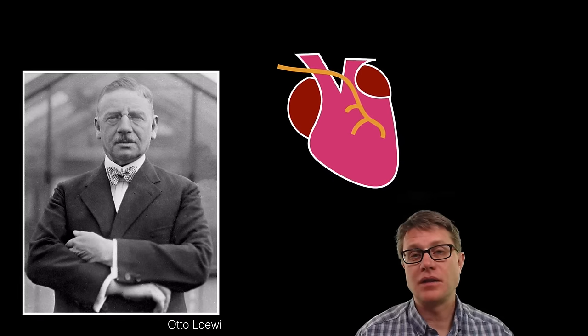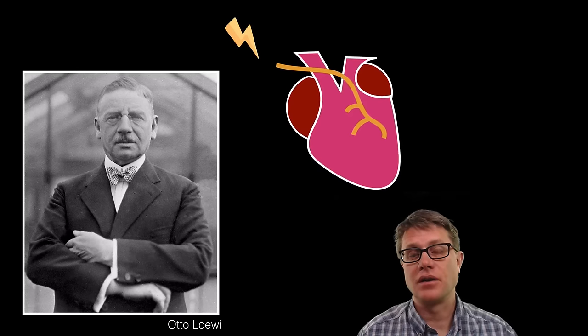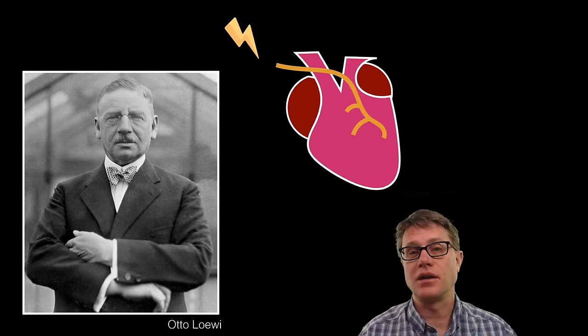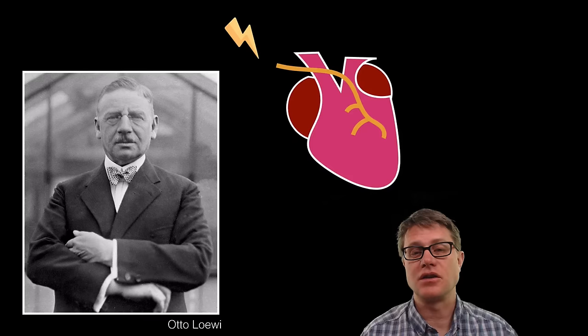Thankfully he had that same dream again and this is the experiment that led to a Nobel Prize win. He had the heart of a frog that was beating and then he would stimulate the vagus nerve on the surface of the heart. And what that does is slow the beating of the heart.